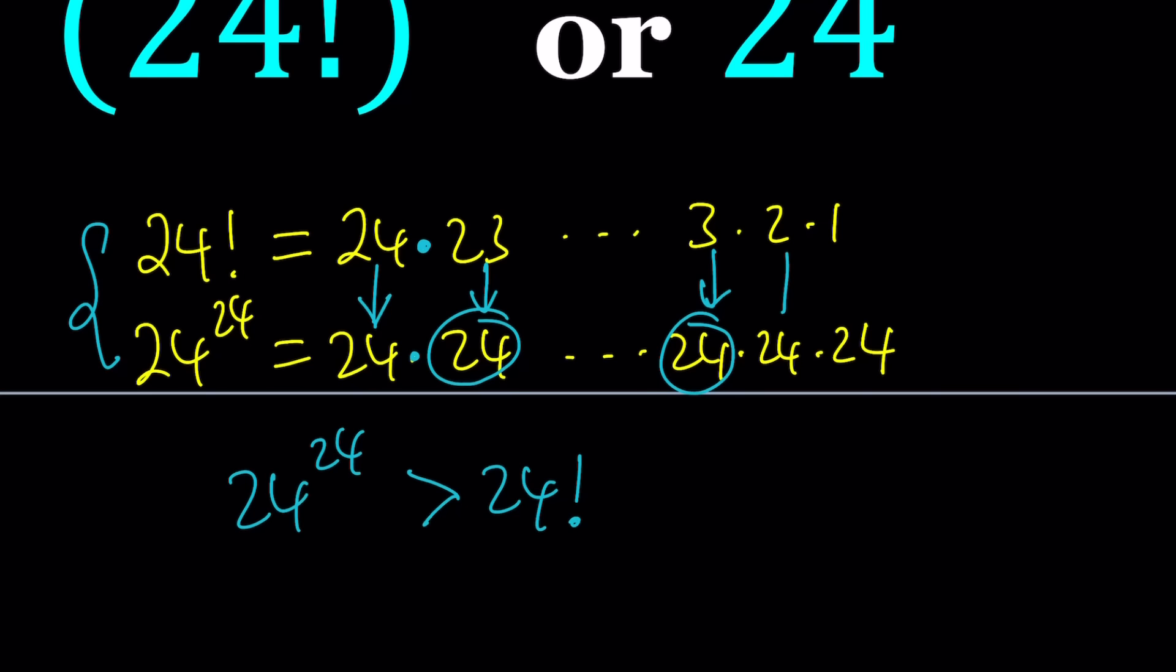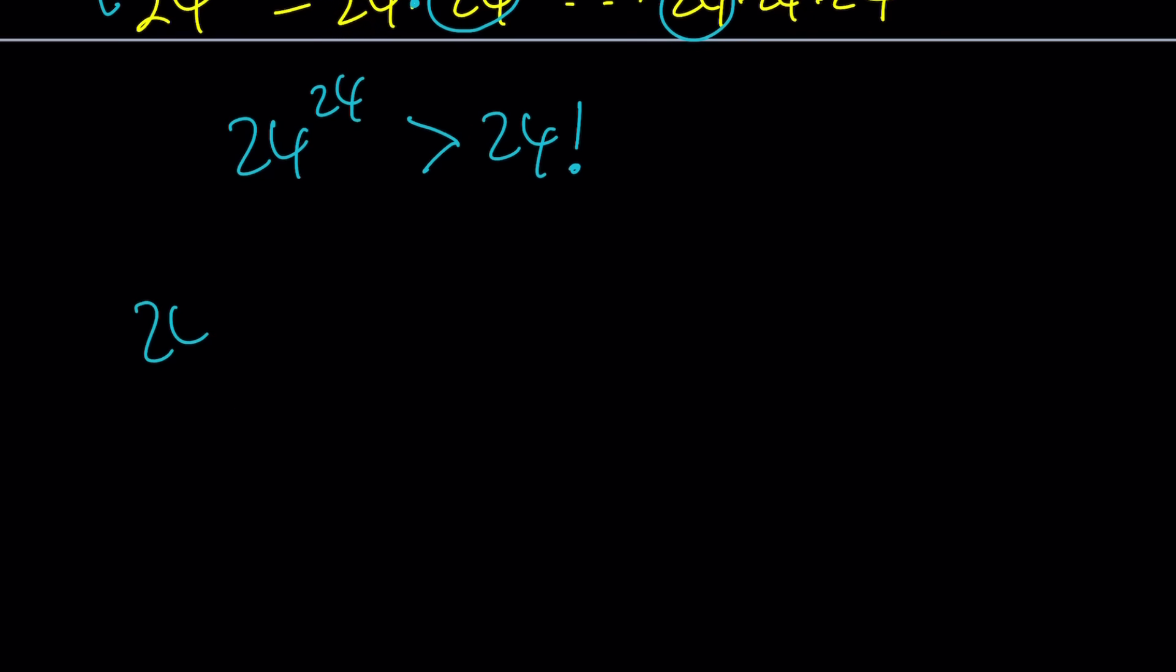The question is, if we take the smaller number, 24 factorial, and square it, multiply by itself, is the inequality still preserved? Let's find out. Let's go ahead and expand 24 factorial as follows, and we're going to square this, obviously.